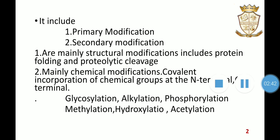Secondary modifications include covalent incorporation of chemical groups at the N-terminal and C-terminal of amino acid residues such as alanine, glycine, leucine, isoleucine, methionine, valine, etc. Chemical modifications include many processes: glycosylation, methylation, acetylation, alkylation, phosphorylation, hydroxylation, etc. These modifications may take place even during peptide chain elongation or after translation termination. In some cases, several polypeptides get assembled into a complex functional protein.